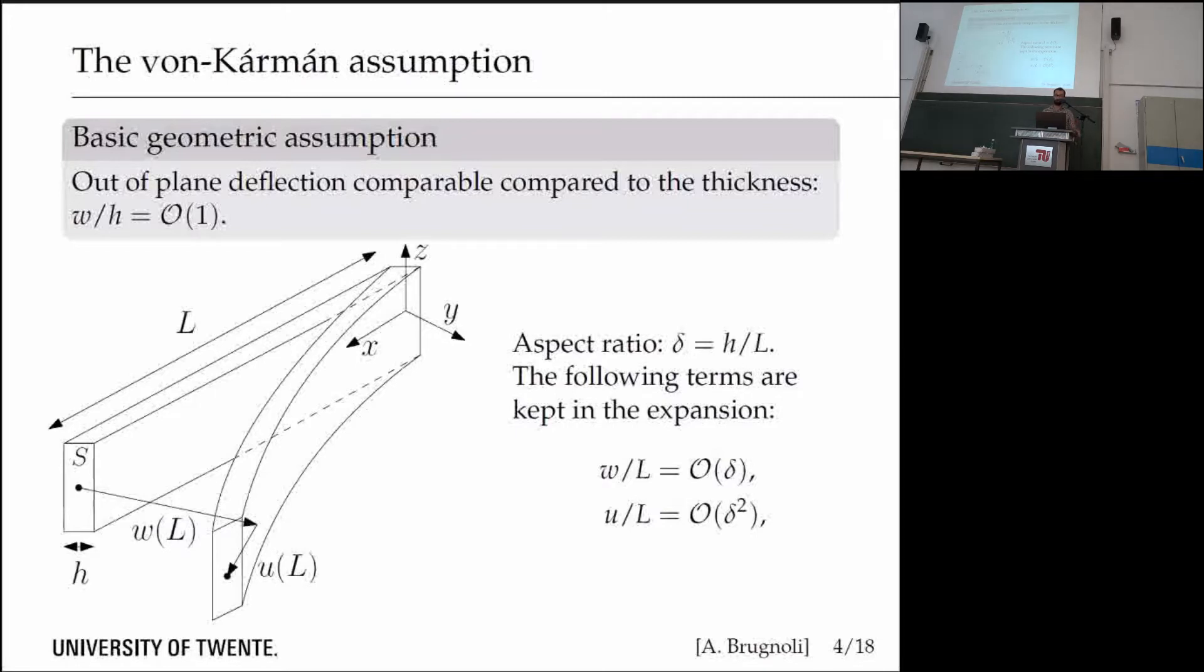For thin beams we consider the aspect ratio, which is the ratio between the thickness and the length. In the von Kármán assumption we retain in the expansion terms that are comparable to this aspect ratio, but also to the squared power of the aspect ratio.